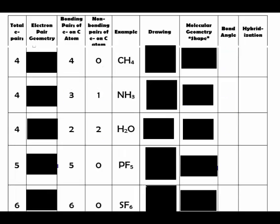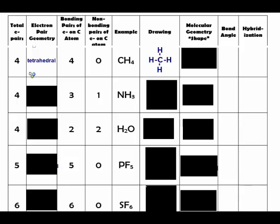When you have four things coming off the central atom and they're all atoms, such as in CH₄, the prefix for four is 'tetra.' It's not linear — it's a 3D structure, so this is tetrahedral. With no lone pairs, both the electron pair geometry and molecular geometry are tetrahedral. You need to remember that tetrahedral has bond angles of 109.5 degrees.